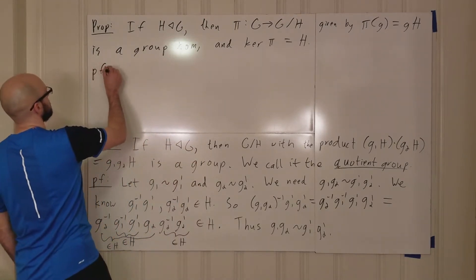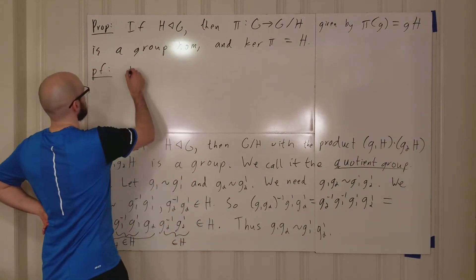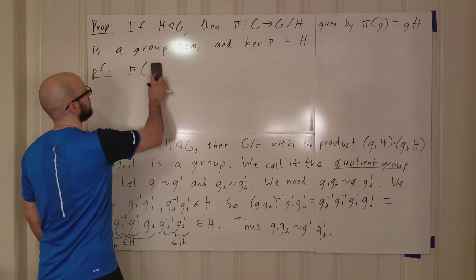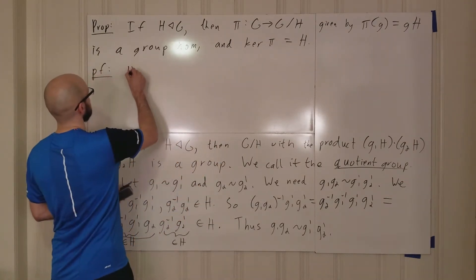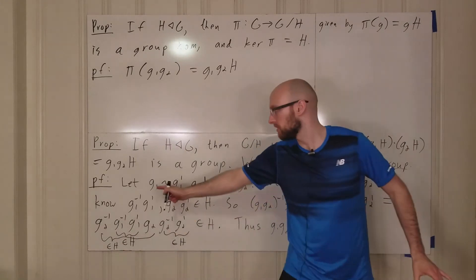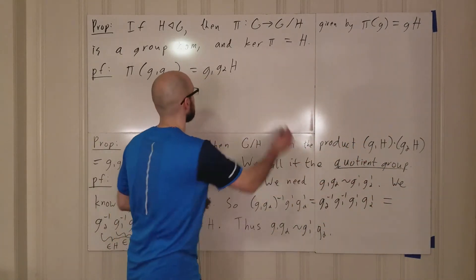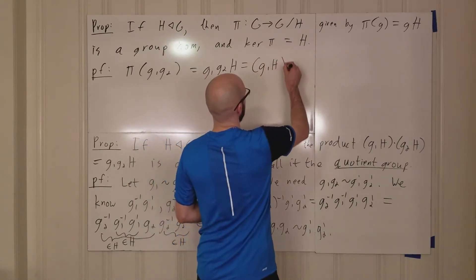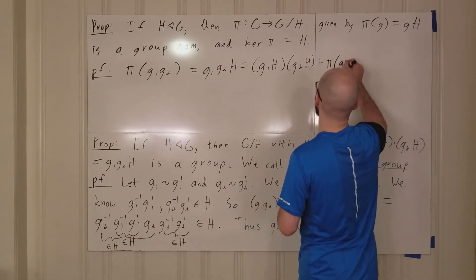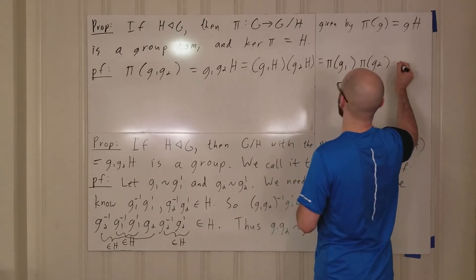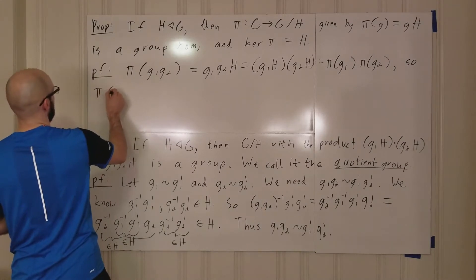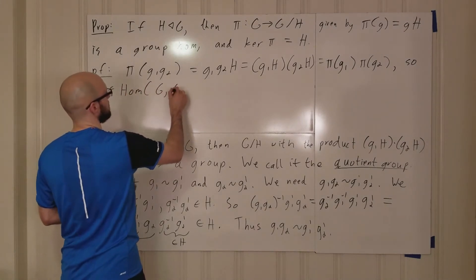Let's prove this. The product π(g1g2) equals g1g2H. But by how our quotient group works, g1g2H equals g1H · g2H. And g1H is just π(g1), so this equals π(g1) · π(g2). Thus π is indeed a homomorphism from G to G mod H.